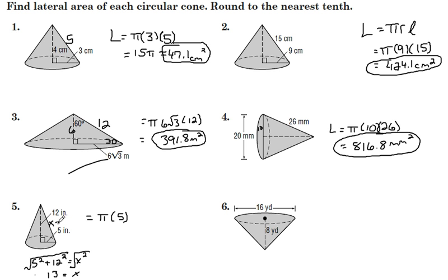So our hypotenuse is 13, that means our slant height is 13. Five times 13 times pi yields 204.2 square inches.